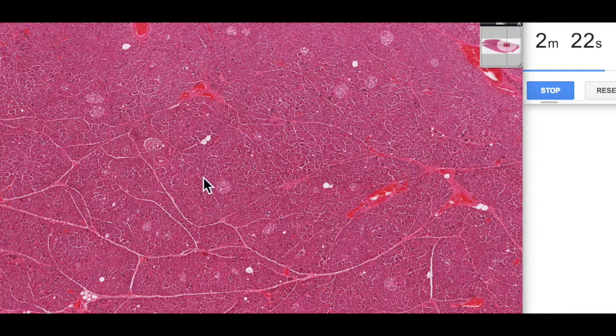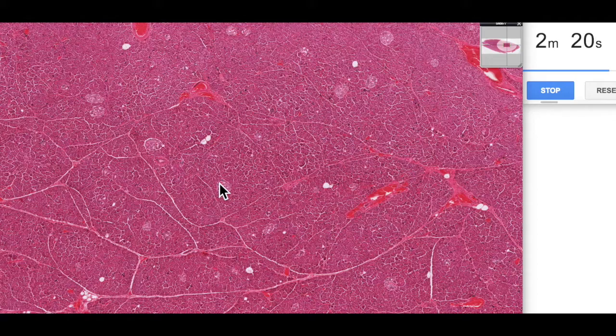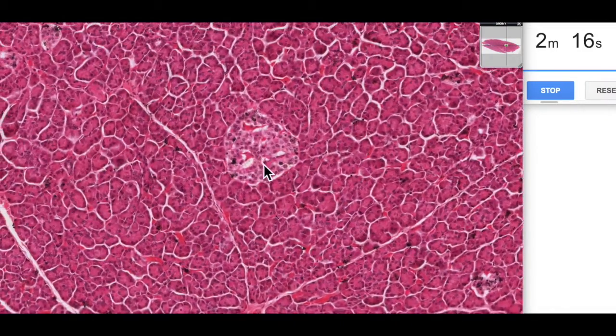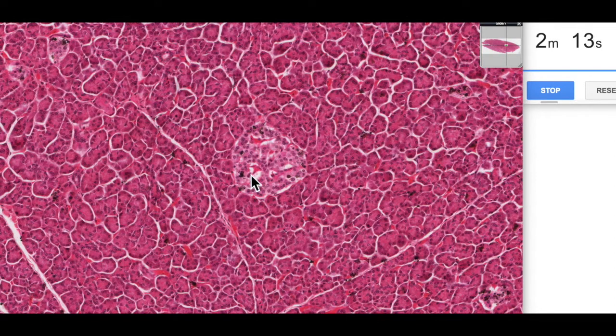These little pale staining circular regions are actually the endocrine pancreas which are in structures referred to as islets of Langerhans. So here's a little island. Islet means a little island. So a little island of endocrine cells made up of alpha cells and beta cells and so on that are producing hormones which are regulating blood glucose. They secrete hormones such as glucagon and insulin which help to regulate blood glucose.